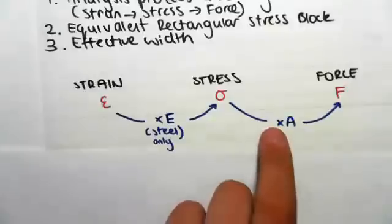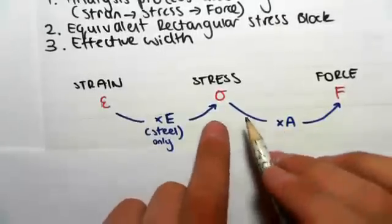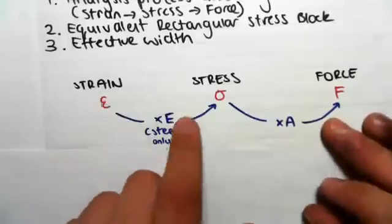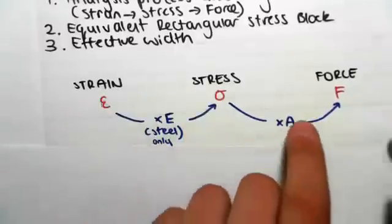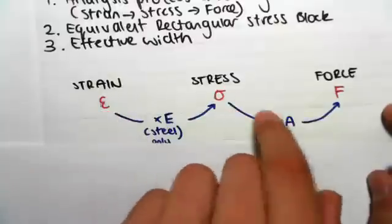Now, we can go for both the steel and the concrete, we can go from stress to force just by multiplying by the area. So this is going to be the process to work out the forces in our section. We go from strain to stress to force.